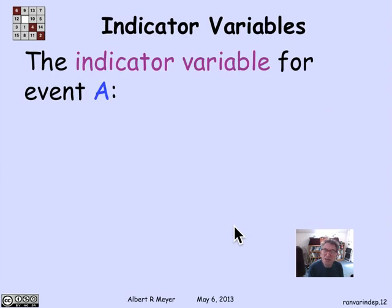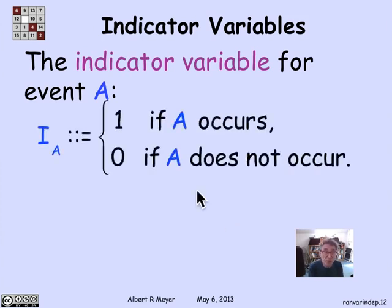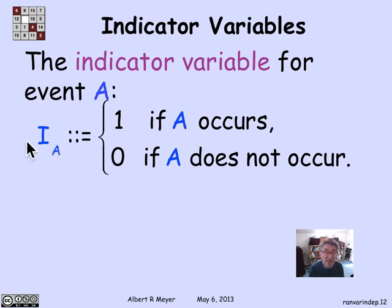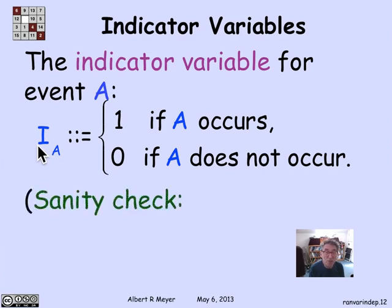Here's a more interesting example. To explain it, we need the idea of an indicator variable, which is itself a very important concept. If I have an event A, I can package it into a random variable. The indicator variable I_A is defined to be 1 if A occurs and 0 if A does not occur. This captures everything that matters about event A. Events are therefore special cases of random variables.